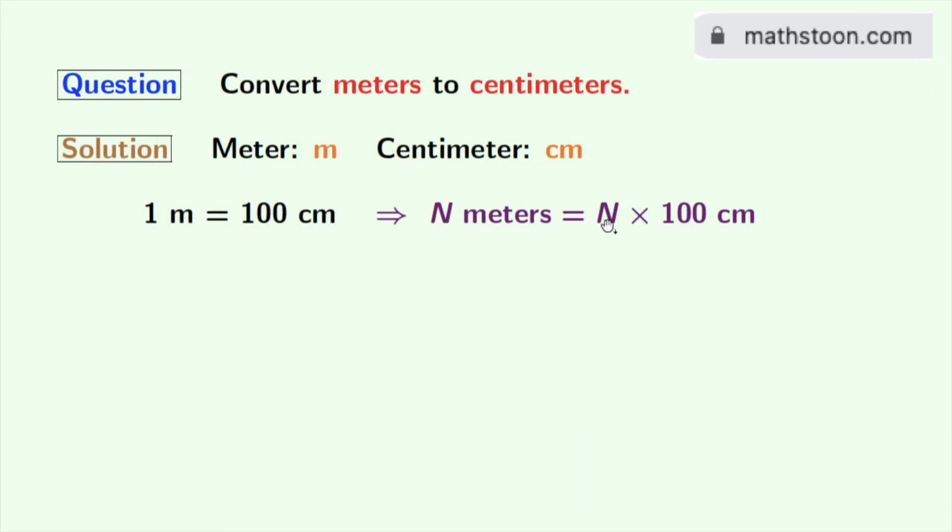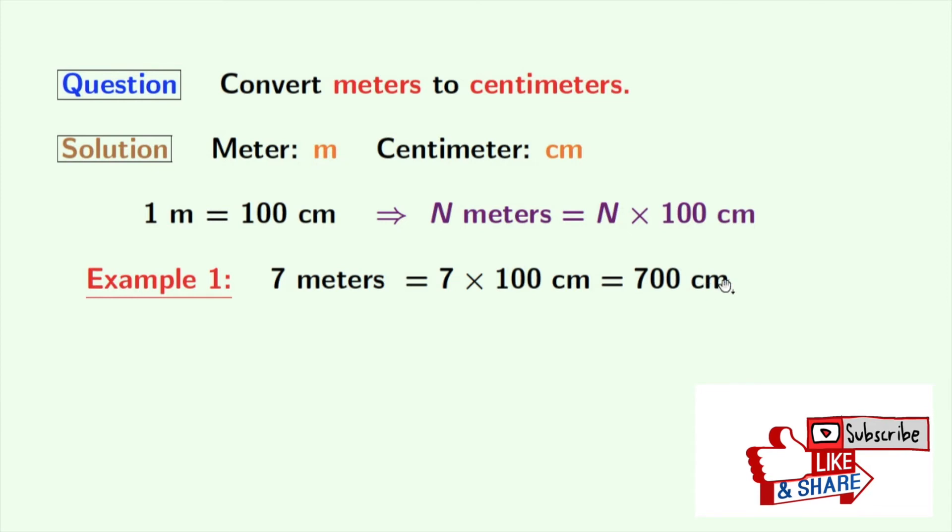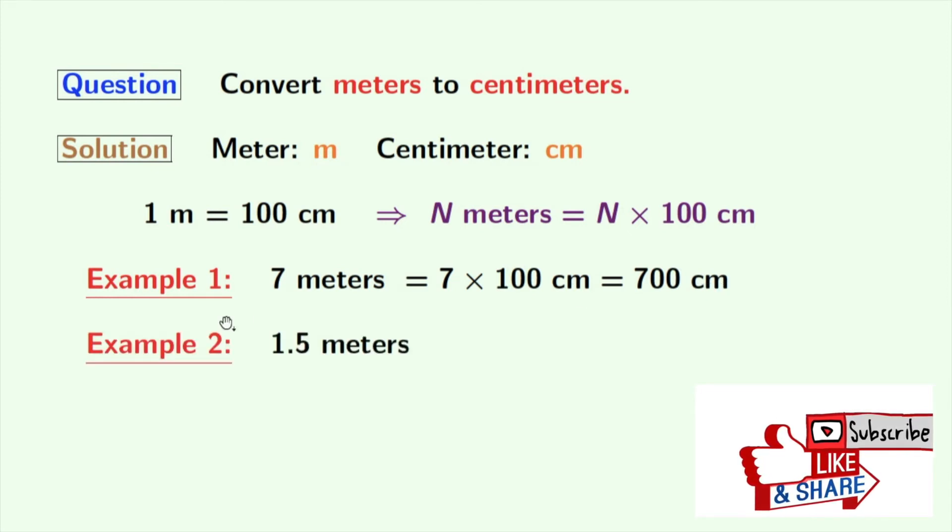Firstly, we will convert 7 meters into centimeters. Applying this rule, we can say that 7 meters is equal to 7 times 100 centimeters, which is equal to 700 centimeters.